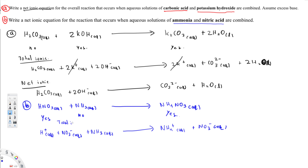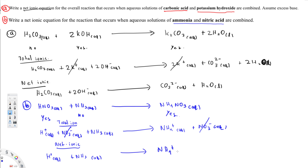To write the net ionic equation, we identify the spectator ions — the ions that exist on both sides. NO₃⁻ appears on both sides, so we cancel those. The net ionic equation is: H⁺ aqueous plus NH₃ aqueous → NH₄⁺ aqueous. That's how it's done. I hope you guys like this video, see you next time.